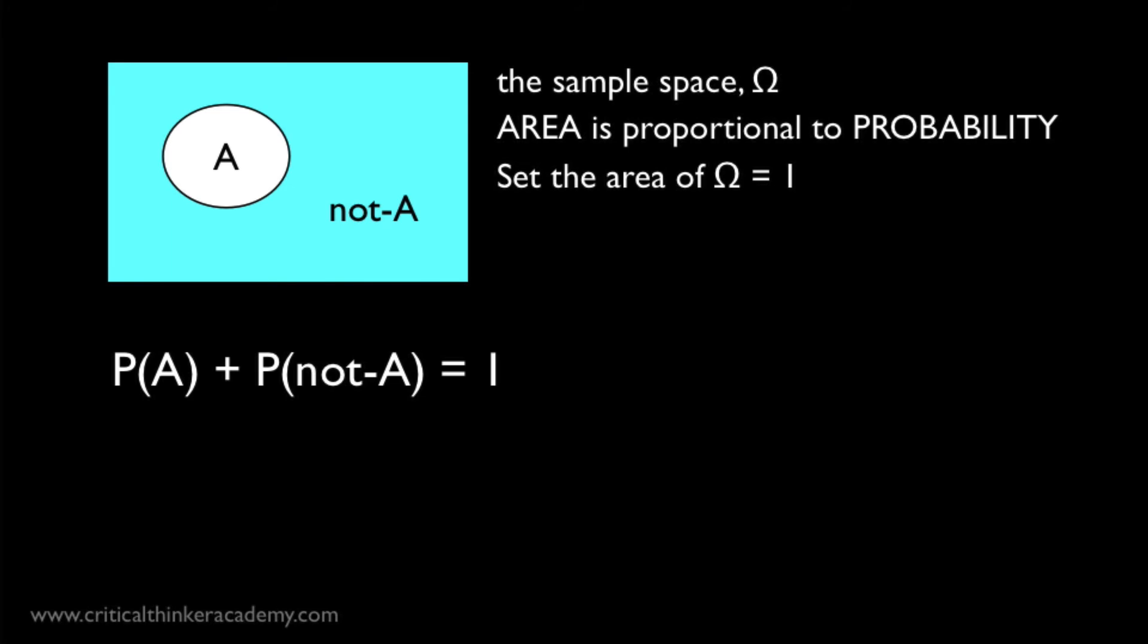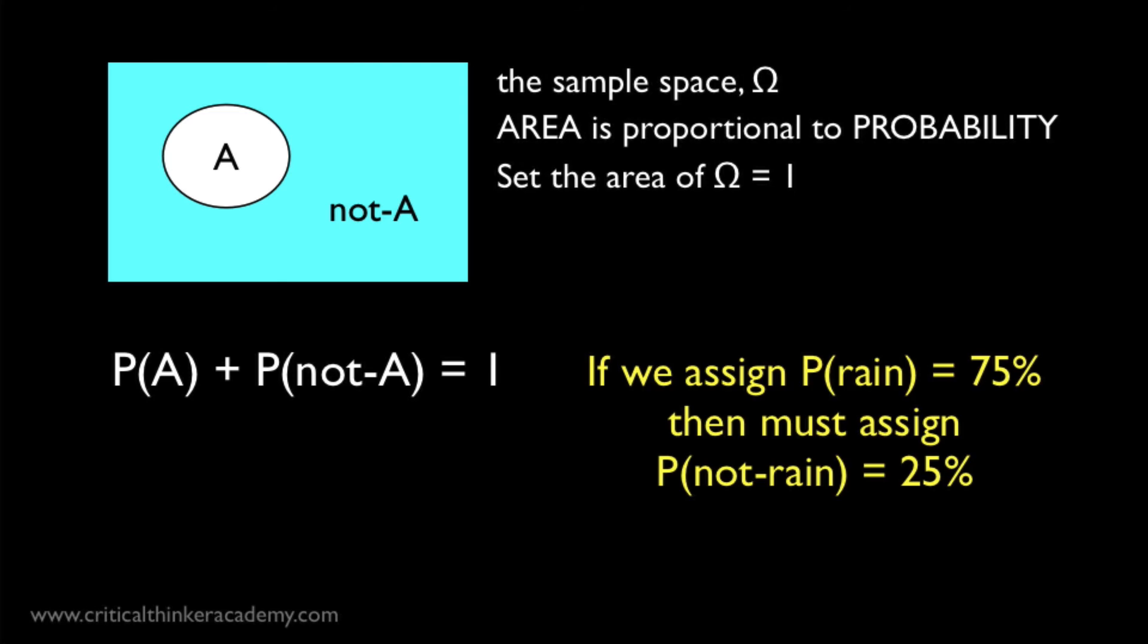This schema shows us how to think about the probability of any event or proposition and its negation. Even ones that are hard to assign a numerical measure to. For example, if A is the proposition that it's going to rain tomorrow, and we think this has a 75% chance of being true, then according to this rule, we're compelled to assign a probability of 25% to the proposition that it won't rain tomorrow.